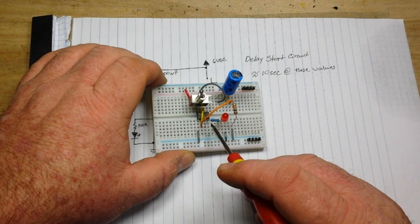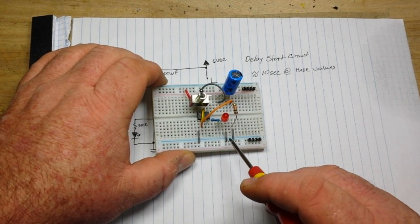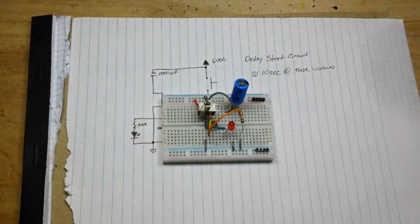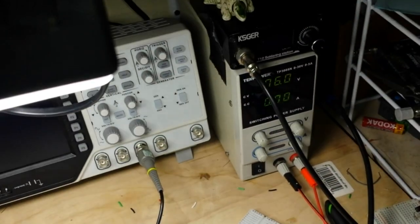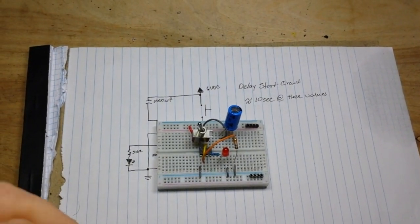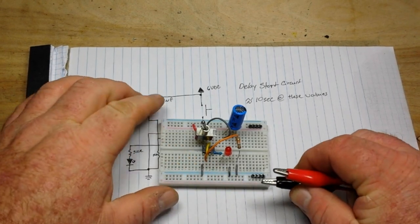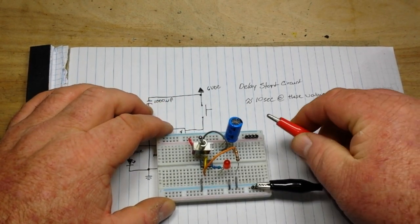Then the output here, we have that 510k resistor going to the anode of that LED and the cathode going directly to ground. There is our power supply at six volts.